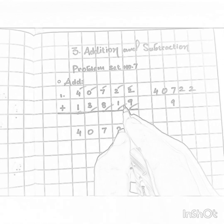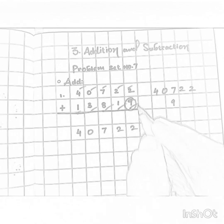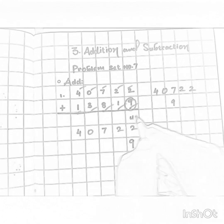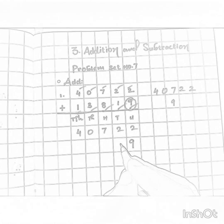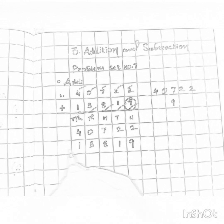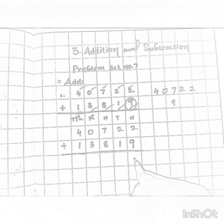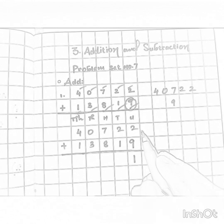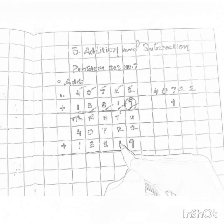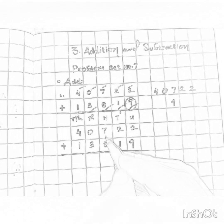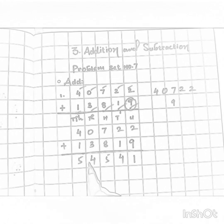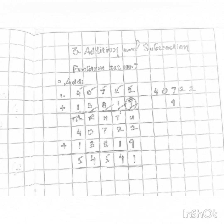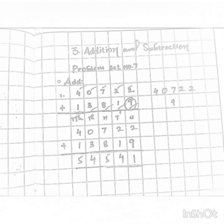Let us rewrite and solve this example: forty thousand seven hundred twenty two, and the next number, thirteen thousand eight hundred and nineteen. Nine is at the units place. So: nine plus two is eleven — we cannot write a two-digit number in the units place, so we write one and carry one forward. Two plus one is three, and one is four. Next: seven plus eight is fifteen, carry one. So three and one is four, four and one is five. Your answer is fifty four thousand five hundred and forty one.